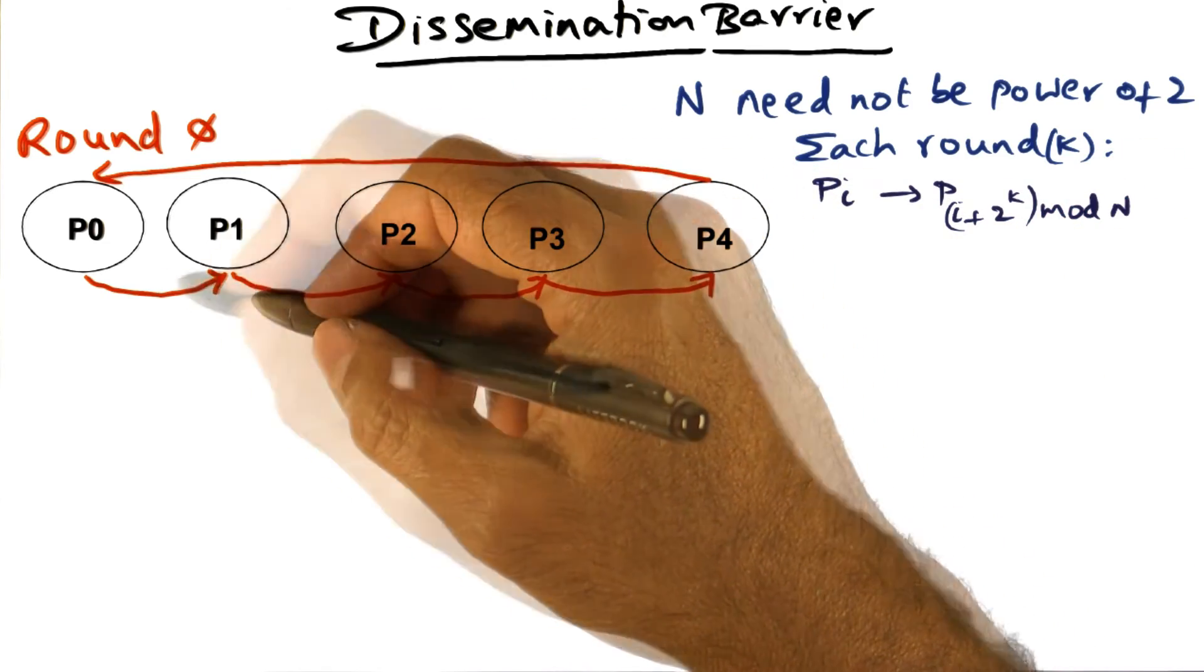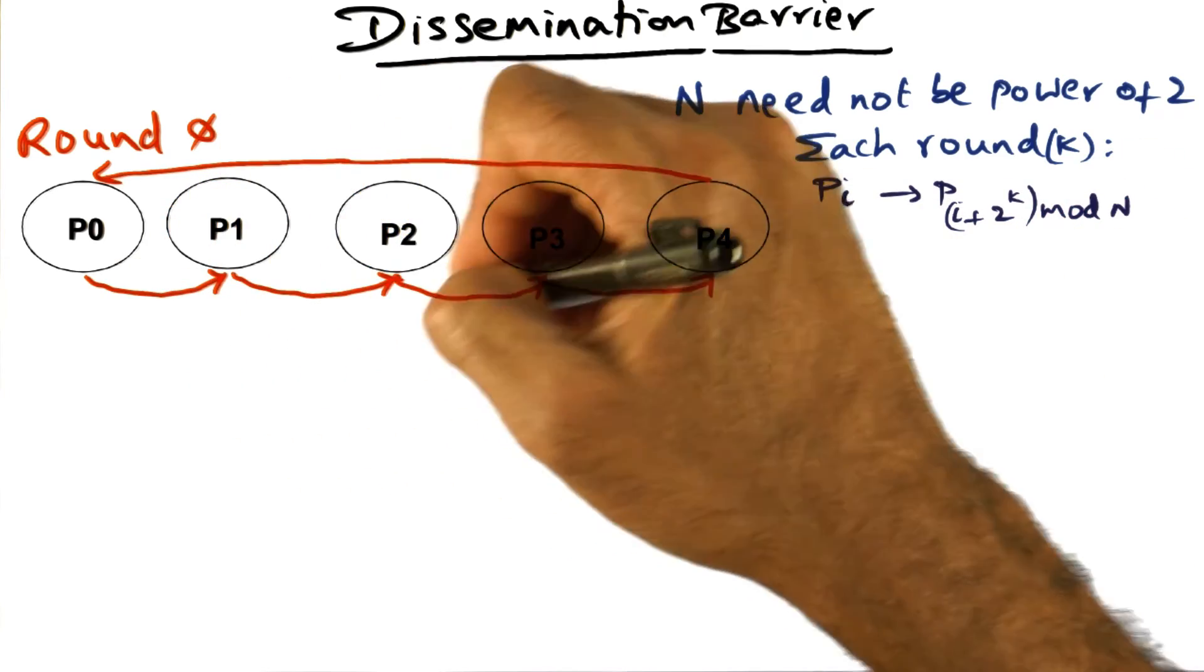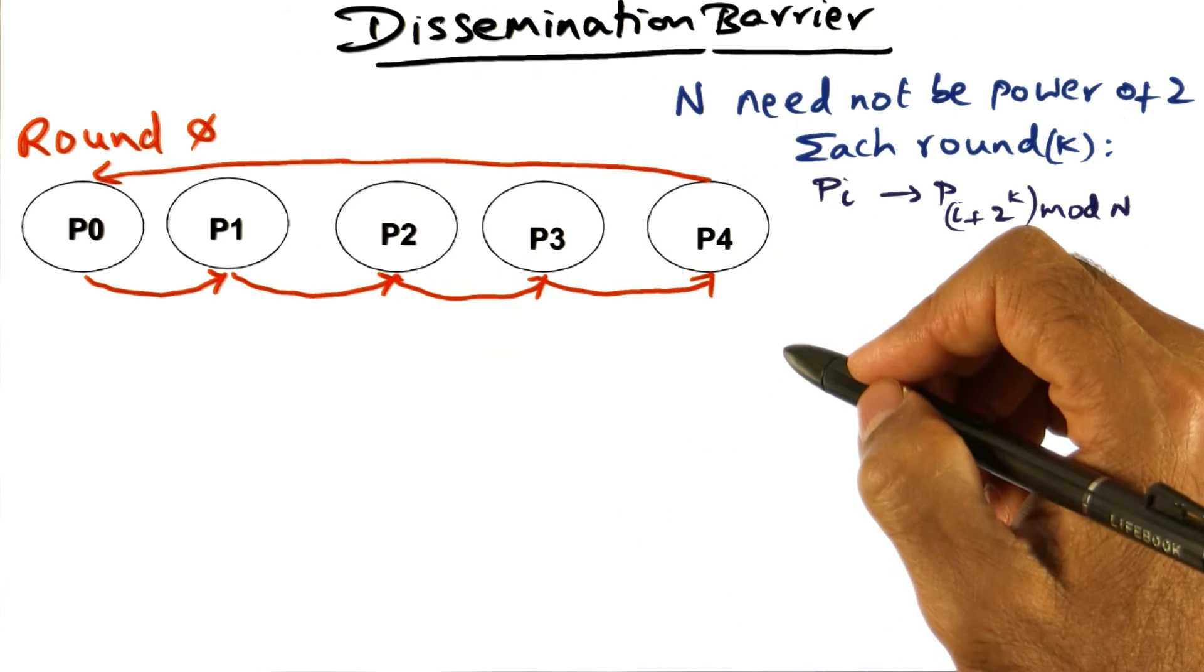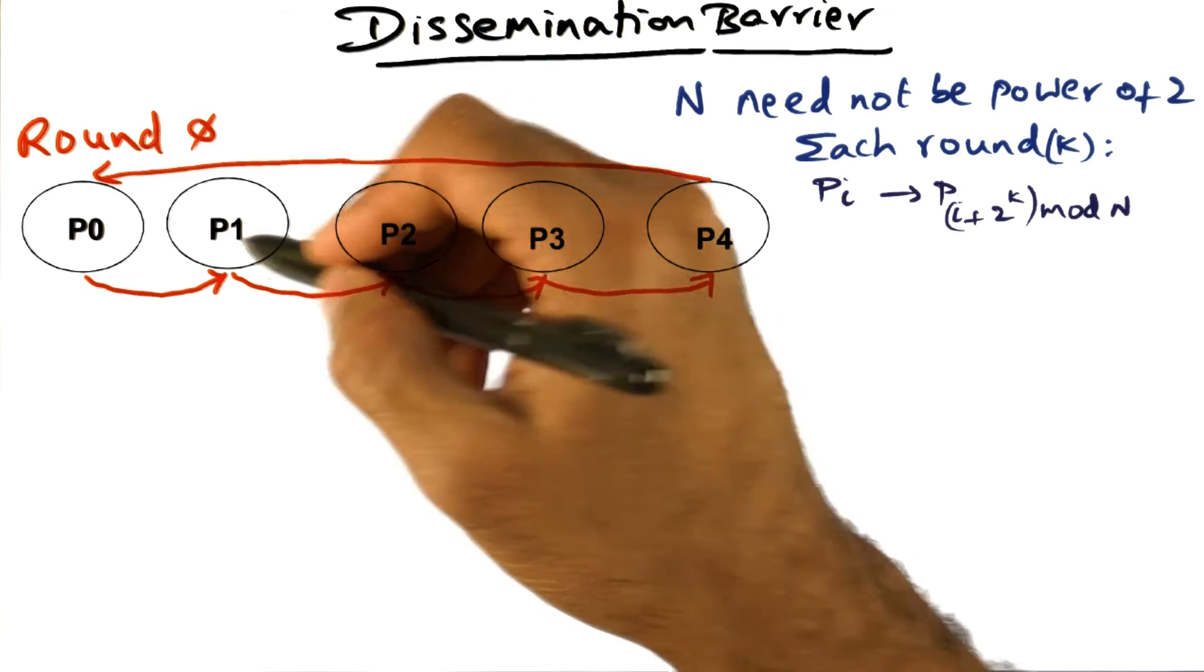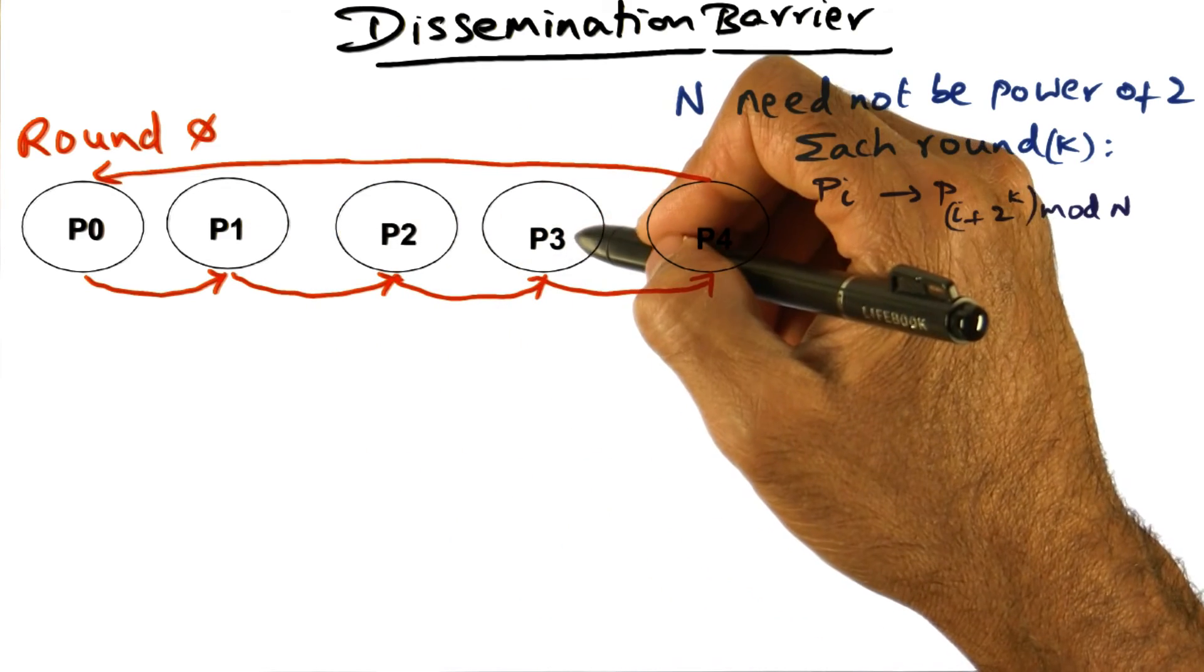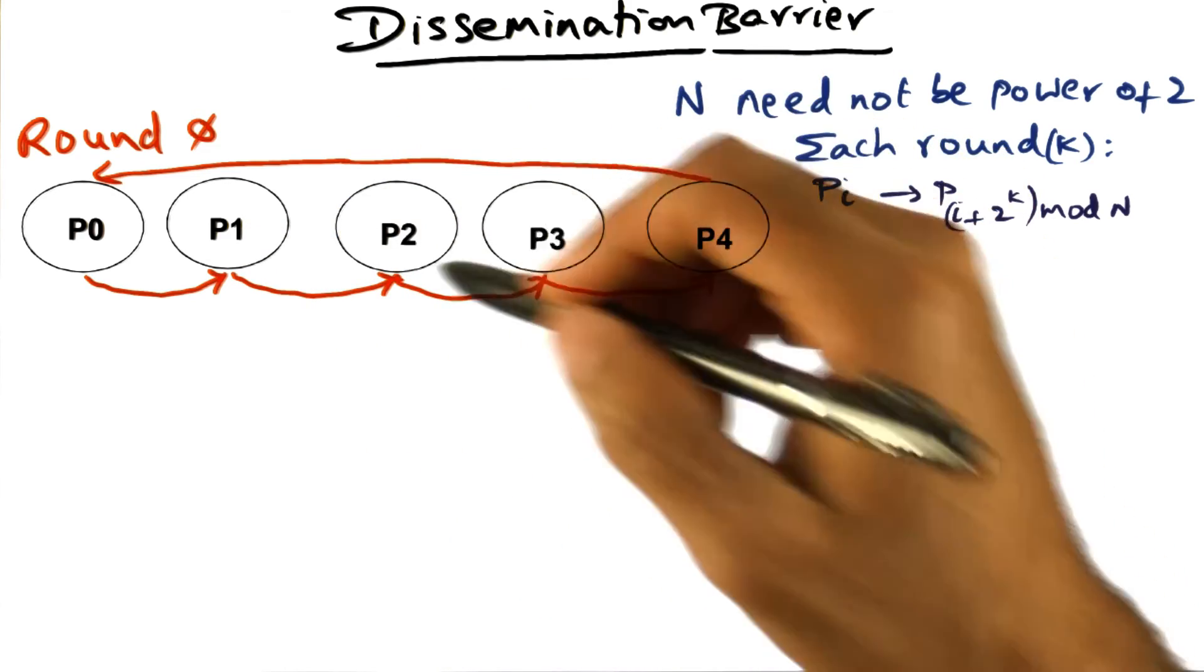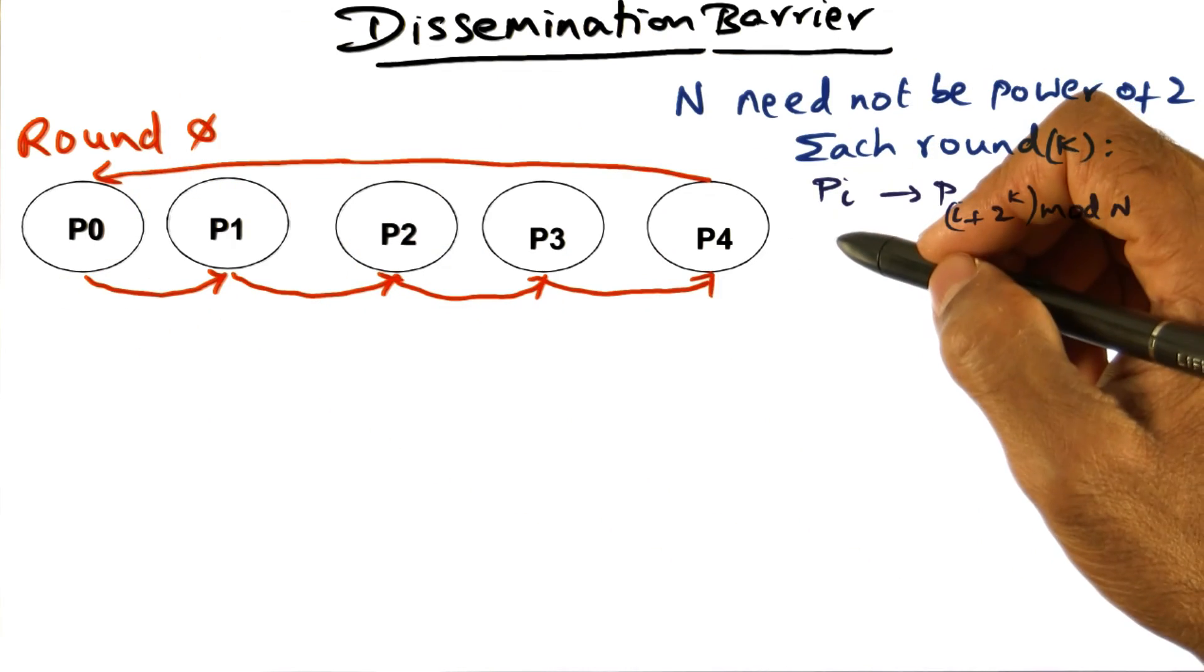What you want to see is that all of these communications that I'm showing you are parallel communication. They're not waiting on each other. P1, whenever it's ready to arrive at a barrier, is going to tell the next guy. P2 is going to tell the next guy when it's ready and so on.